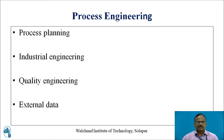Under process engineering, these are the inputs and outputs. Process planning is the input. Industrial engineering is the input. Quality engineering is the input. And external data is the input.